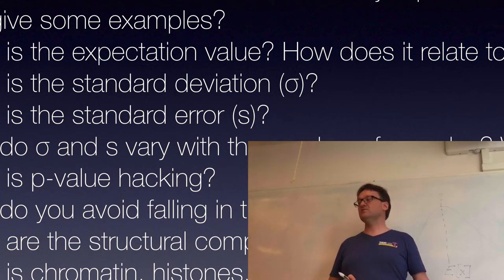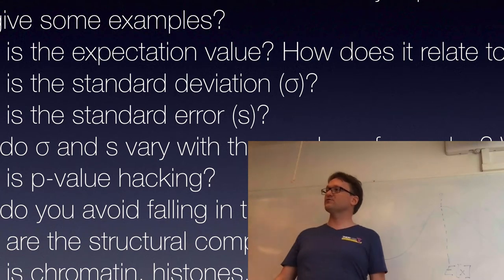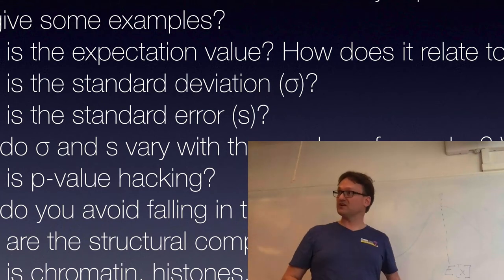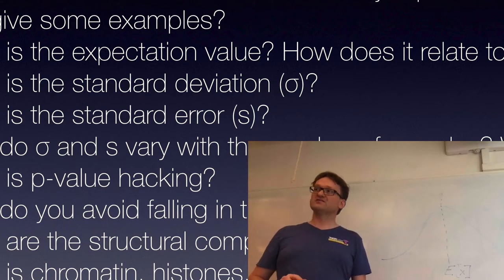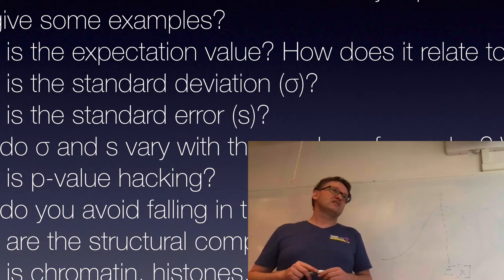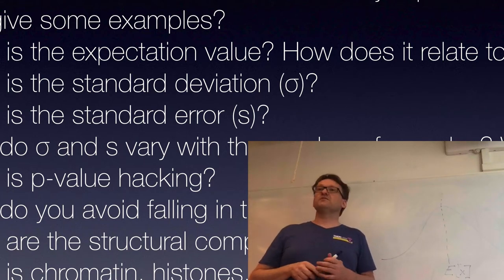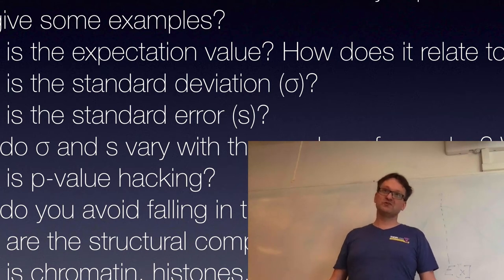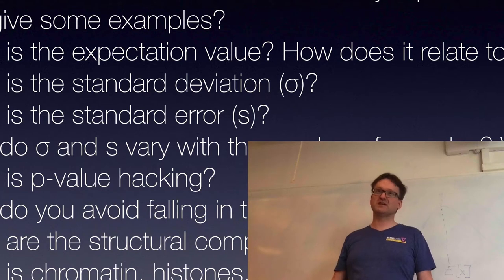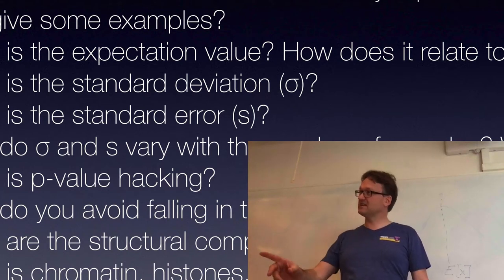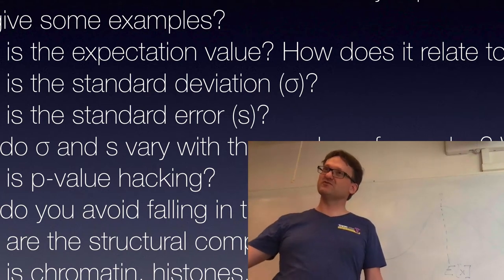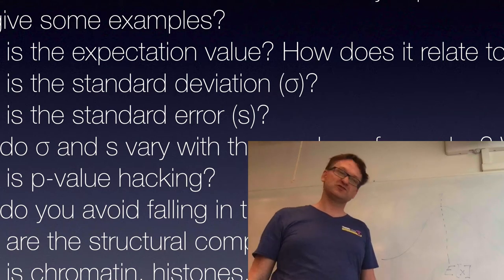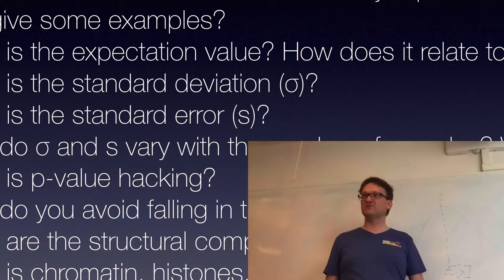In some cases you might have a smart way to account for systematic errors. For example, if I know from experience that a thermometer always shows two degrees too much, I would remove two degrees from my measurement values — I'm correcting them because I know that way I can get a better estimate of the expectation value.